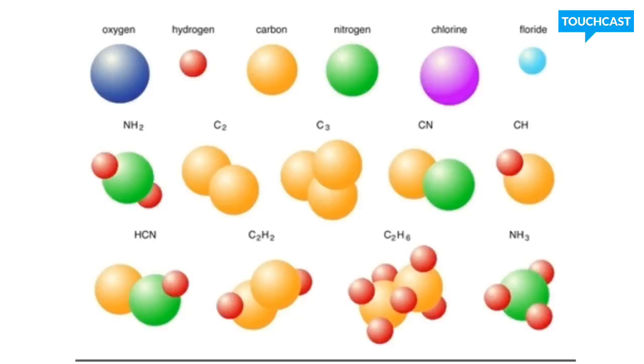All right. Now, once again, a pure element is going to be made up of only one type of atoms, whereas a compound is made of two or more different elements. So, if you all look there, the top row is going to be all pure elements, and these two right here are pure elements because they're made of one type of atom. Everything else is going to be a compound.